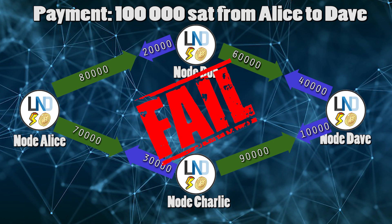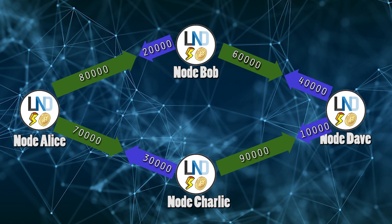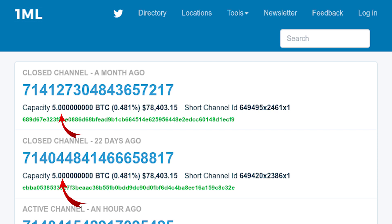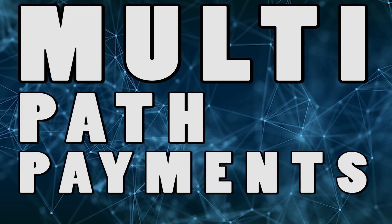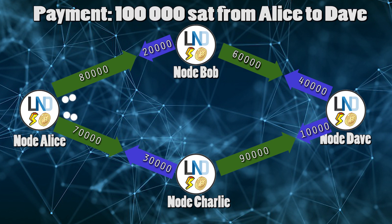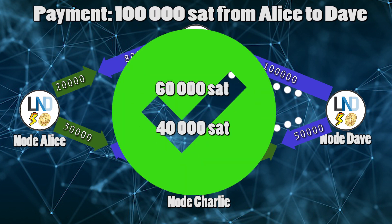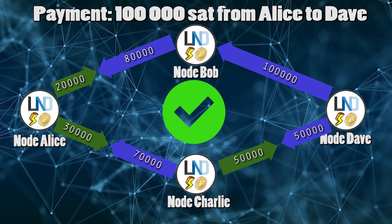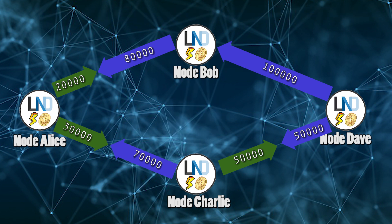On the one hand, single path payments promote a robust Lightning Network with high capacity channels. On the other hand, it makes the process problematic for smaller and less educated participants. Multipath payments allow the payment process to be split into separate paths with their own distinct payment hash. They are atomic because payment either happens with all separate paths succeeding, or not happening at all — making it easier for smaller channels to be part of the routing ecosystem.